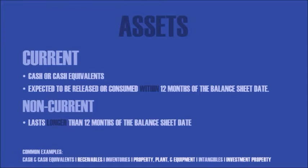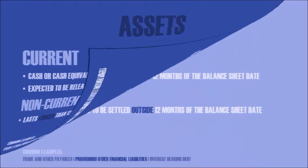Next we have liabilities. Sometimes you will find in accounting statements that items are listed in solvency order. According to the standards, certain items must be presented on the face of the statement, including totals for these assets: cash and cash equivalents, receivables, inventory, PPE which is property, plant and equipment, intangibles and investment property.